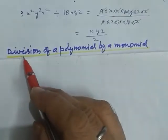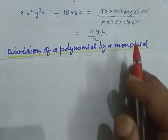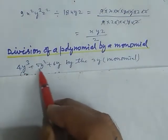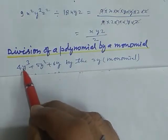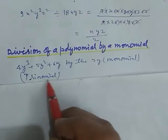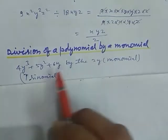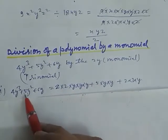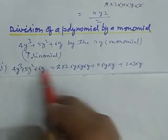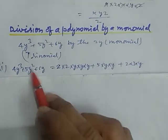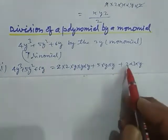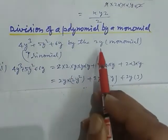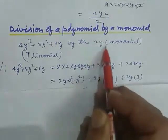Now we take division of a polynomial by a monomial. This polynomial has three terms — 1, 2, 3 — so this is a trinomial. And this is a monomial because it contains a single term. We want to take 2y common because this is the monomial by which we divide.